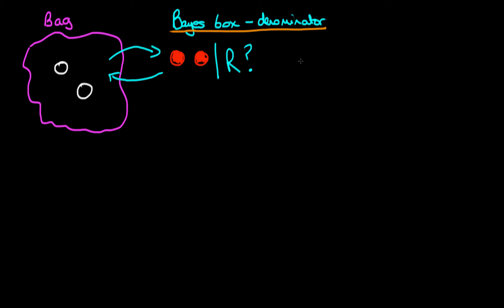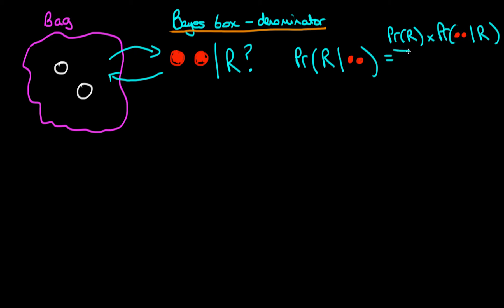We can use Bayes' rule to work out our posterior probability distribution for the number of red balls in our bag. The probability of a given value of R, conditional on having drawn two red balls, equals in the numerator the prior probability for a particular number of red balls times the likelihood — the probability of drawing two red balls conditioned on a particular value of R. The denominator is the marginalised probability obtained by marginalising the numerator with respect to R. So how does a Bayes box help us calculate this posterior?